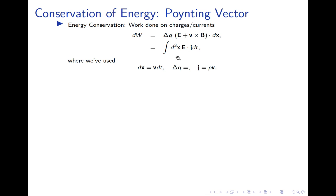The total work done on a distribution of charges is W = ∫ ρ E · v d³x dt = ∫ E · J d³x dt, since J = ρv. This gives us the rate of work done by the electromagnetic field on a charge-current distribution as the volume integral of E · J.